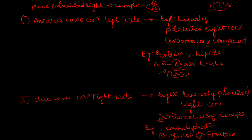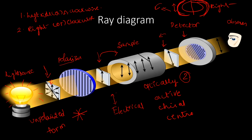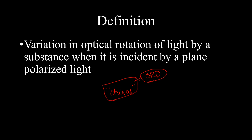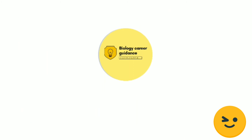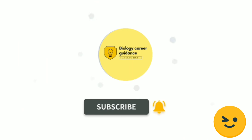So basically, in Optical Rotatory Dispersion we test whether a compound is dextrorotatory or levorotatory. The plane polarized light will show either a clockwise or anti-clockwise turn. This particular ORD spectroscopy is mainly used for knowing the optical rotation or optical activity of a compound.